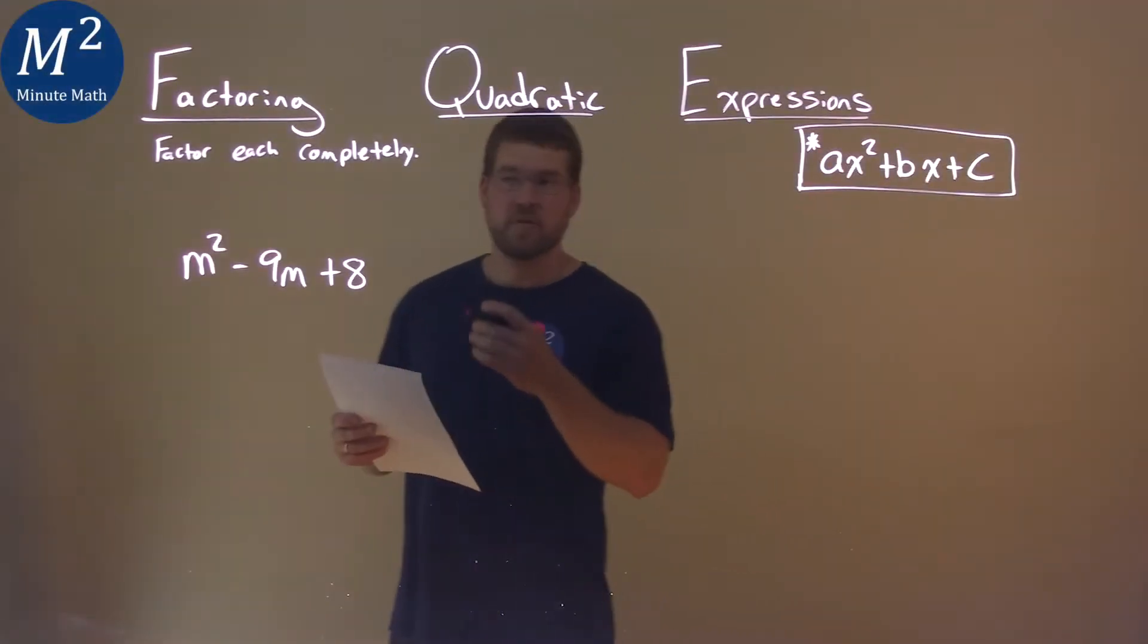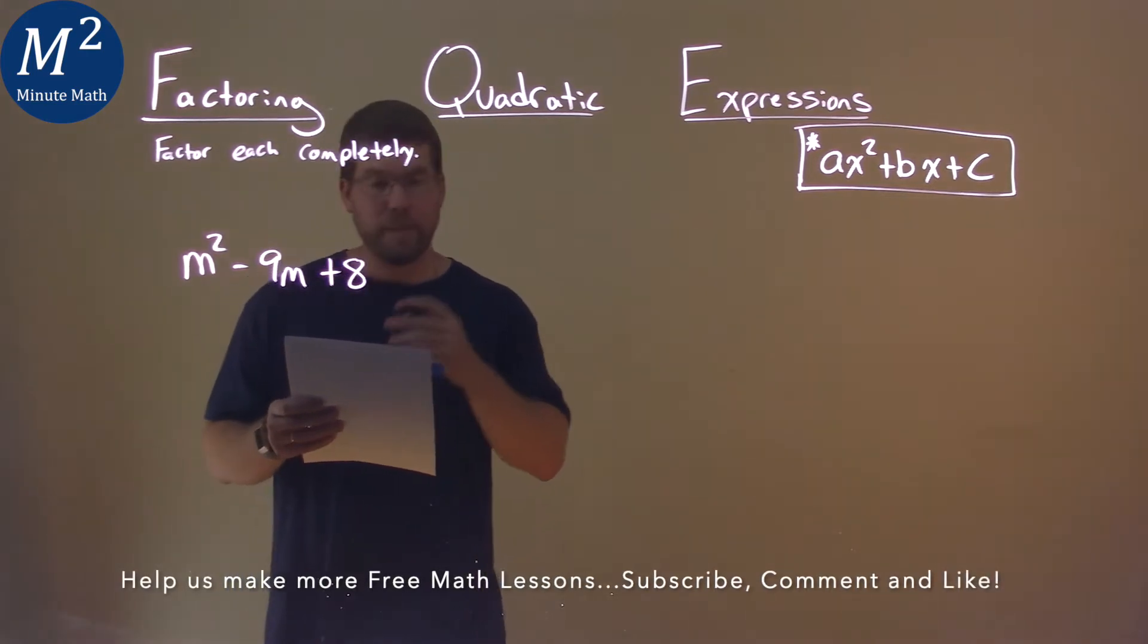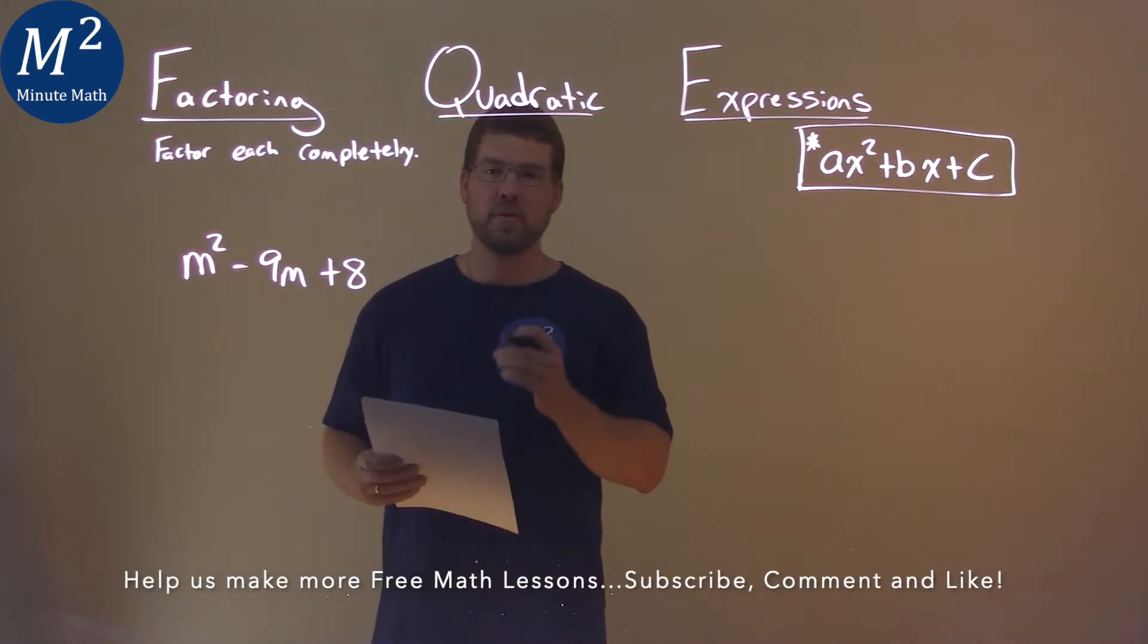We're given this expression right here, m squared minus 9m plus 8, and we need to factor this completely.